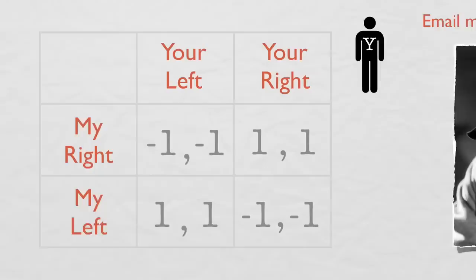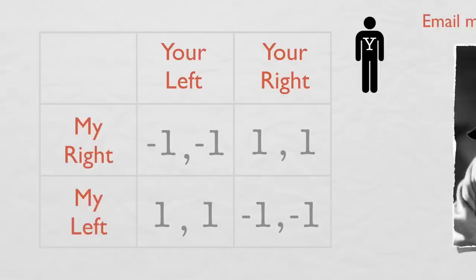In any case, let's try to find the Nash Equilibria in this hallway game. If you play right, then I want to go right, so I'll circle that. If you play left, then I want to go left. Similarly, if I play right, you want to go right, and if I play left, you want to go left.